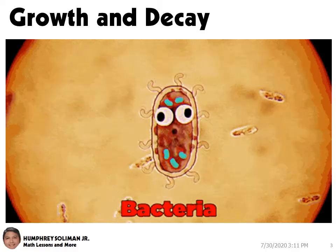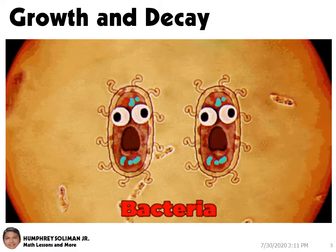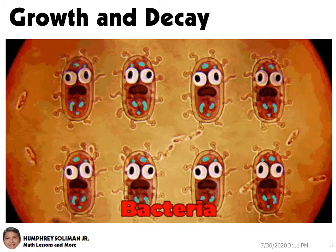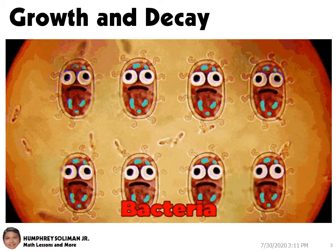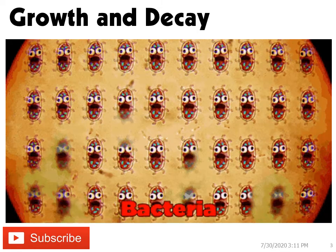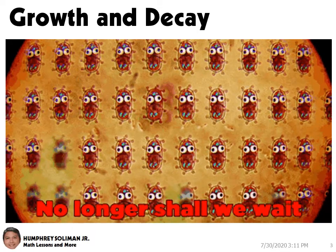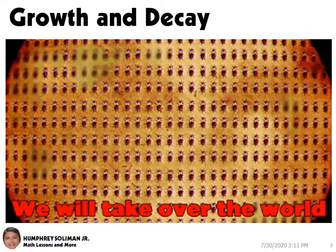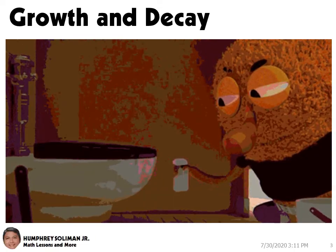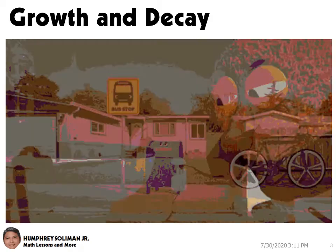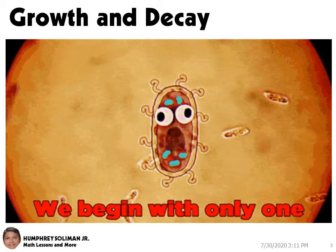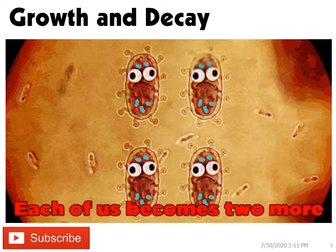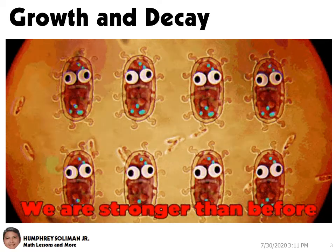In this video, we will examine situations where quantities are either increasing or decreasing exponentially. These situations are known as exponential growth and decay modeling, and these occur frequently in the world around us. Radioactive substances and items that depreciate in value usually decay exponentially. Population of animals, people, and bacteria usually grow in an exponential way.